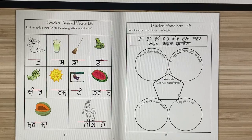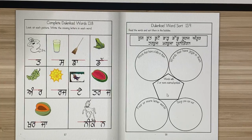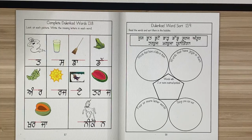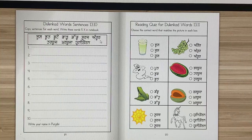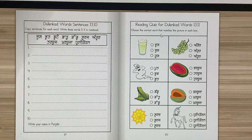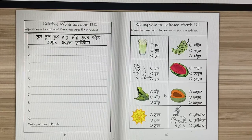Words with two or more matra symbols: Kharbooja has two — 'bu' and 'ja'. Charu has two. Chute has two. So those words will go in that column. That's how you will finish the page. Then you're going to copy sentences from the previous page, and write these words five times each in your notebook. Then you will take a quiz — and hopefully you will get 100%.